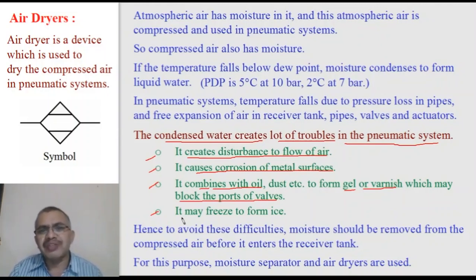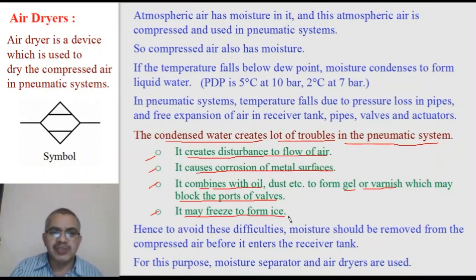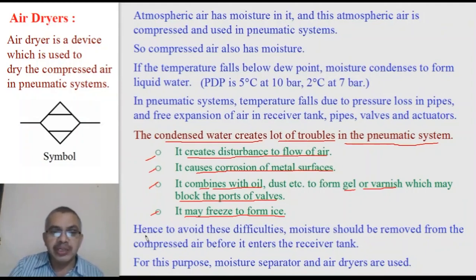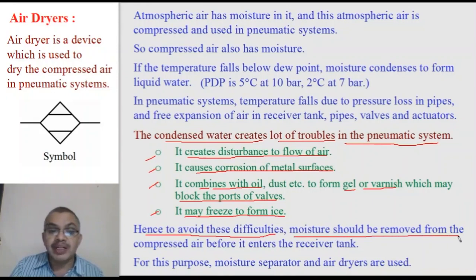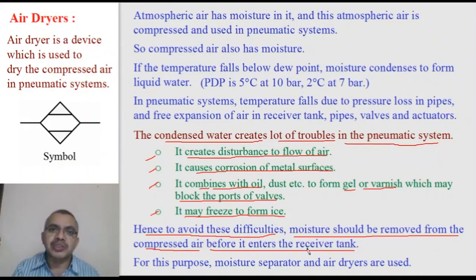If the temperature reaches zero degrees centigrade, water will solidify and ice is formed, so compressed air cannot flow in the pipelines. In order to avoid these difficulties, moisture should be removed from compressed air before it is stored in the receiver tank, and from the receiver tank the dry compressed air is taken to the pneumatic system.